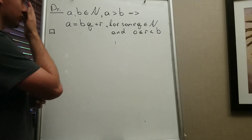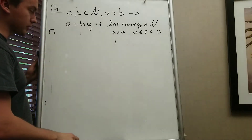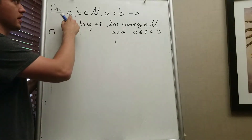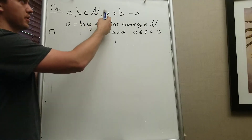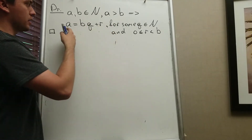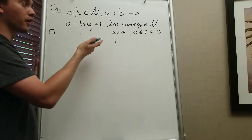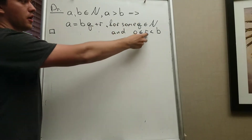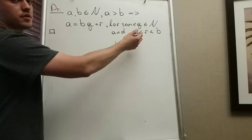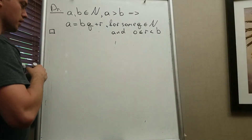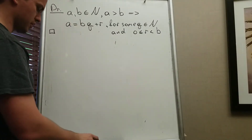In this video I want to show the division algorithm. Basically, if I have two numbers A and B which are natural numbers, and A is bigger than B, then I can write A equals B times Q plus R, where Q is a natural number and R is my remainder, which satisfies 0 ≤ R < B.